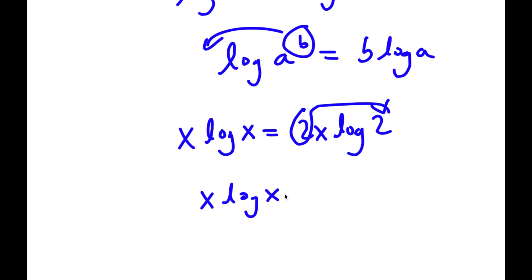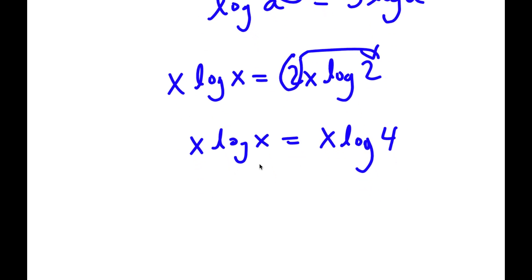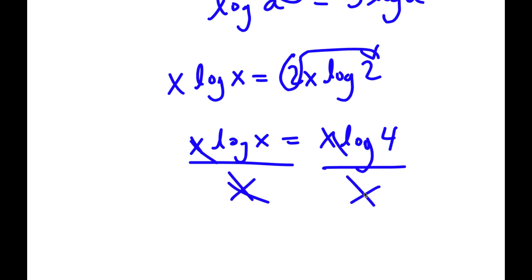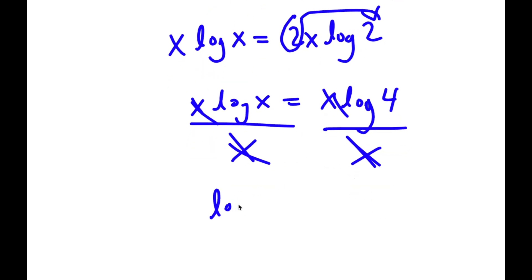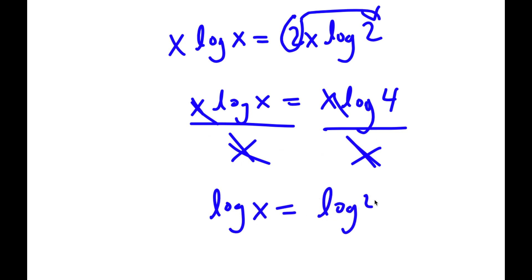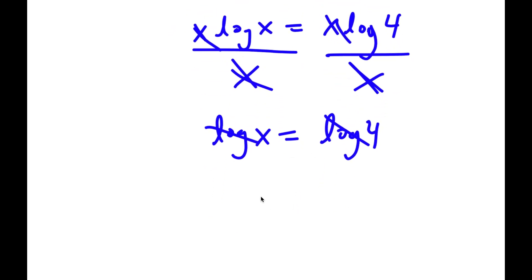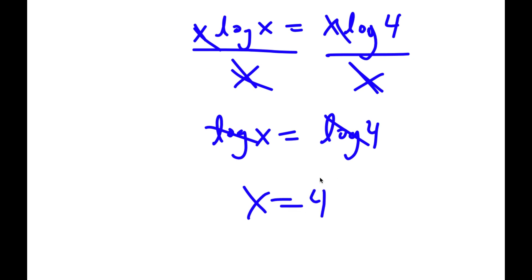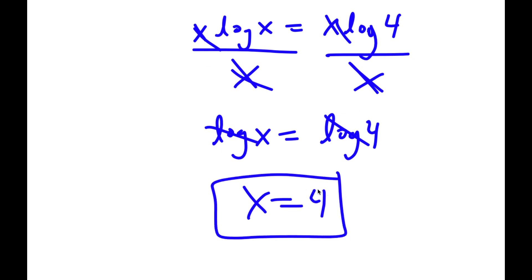So I have x times log x is equal to x times log 2 squared, which is log 4. Now if I divide both sides by x, these cancel out, and I'll be left with log x is equal to log 4. Since the logs cancel out, I get x is equal to 4. So that is my second method.